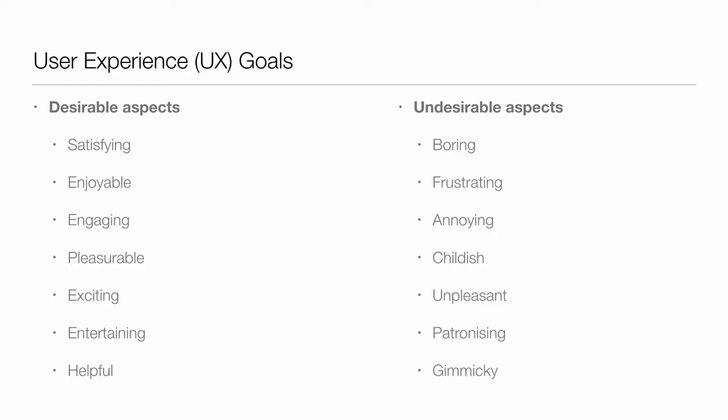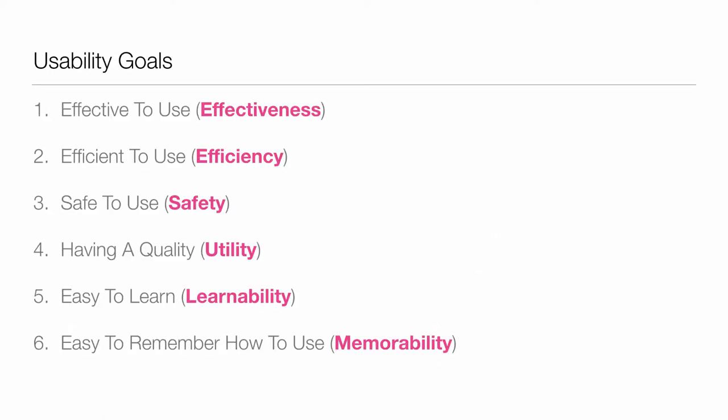UX breaks things down into desirable and undesirable aspects — satisfaction, enjoyment, engaging are desirable; annoying and childish are undesirable. Usability goals such as satisfying, pleasurable, and helpful are in there too. Frustrating or boring might be undesirable usability outcomes. So usability is more of a subset of user experience than being completely different, but you must be very careful not to say that because you've got usability, the user experience is also there. Specific usability goals include efficiency, effectiveness, safety, utility, learnability, and memorability.